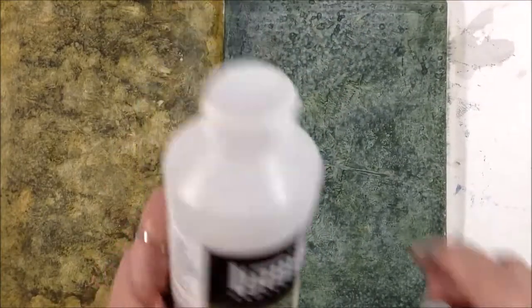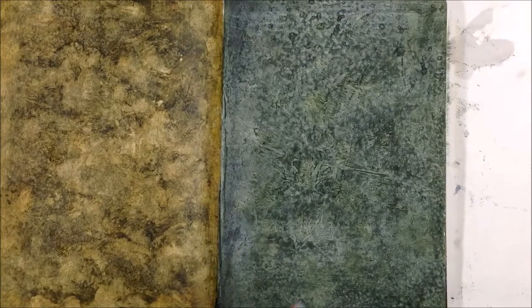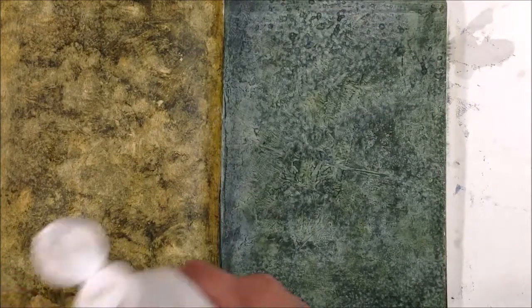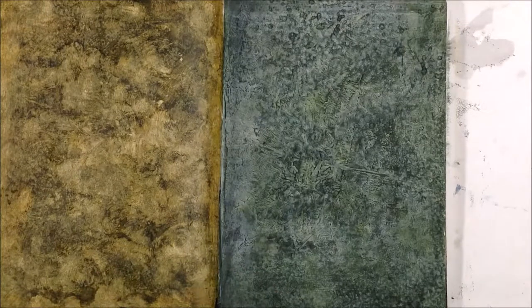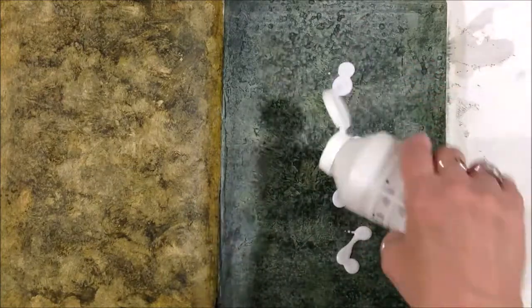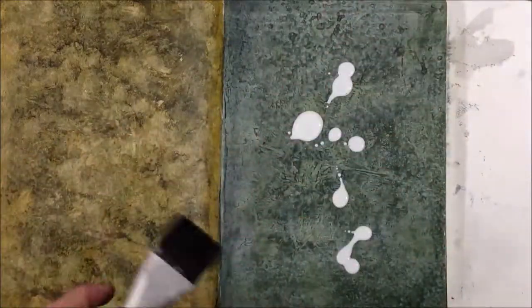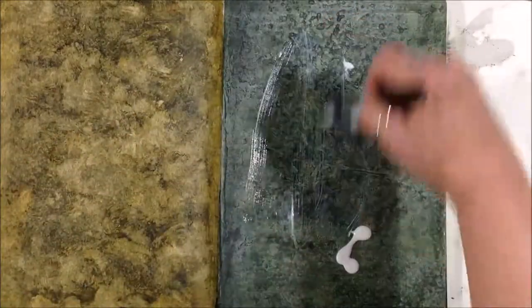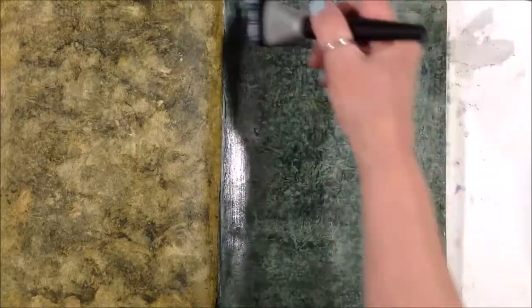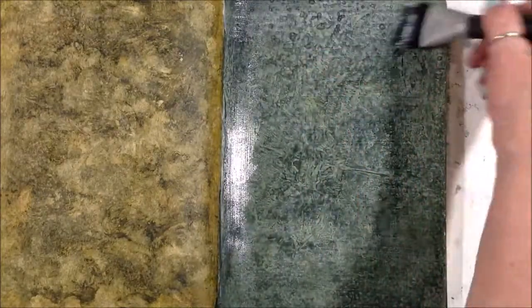Now to make sure that everything that I've done so far stays put, I'm just going to cover the whole page with a layer of fluid matte medium. And it's just a barrier layer so that if something that I put on top of the page ends up being a mistake or it ends up being something I really don't like, I have a much better chance of removing that and taking it back to this stage of the project. So it's just a thin layer of fluid matte medium.